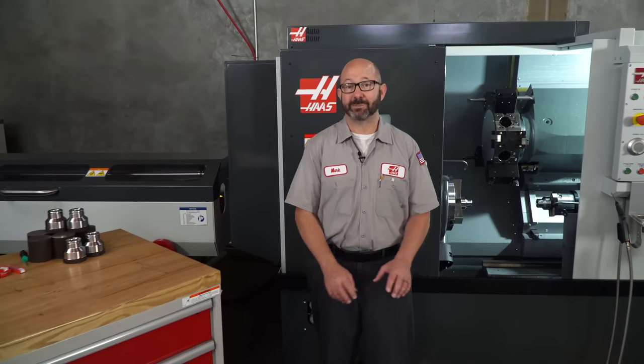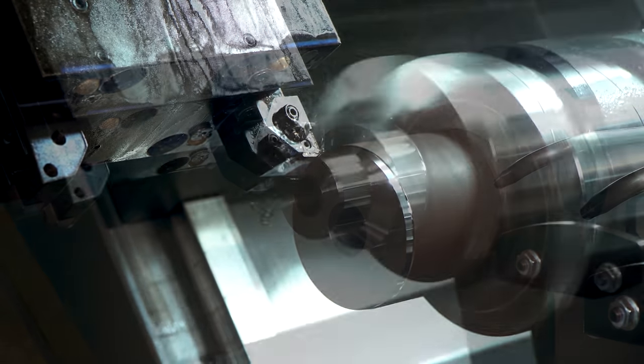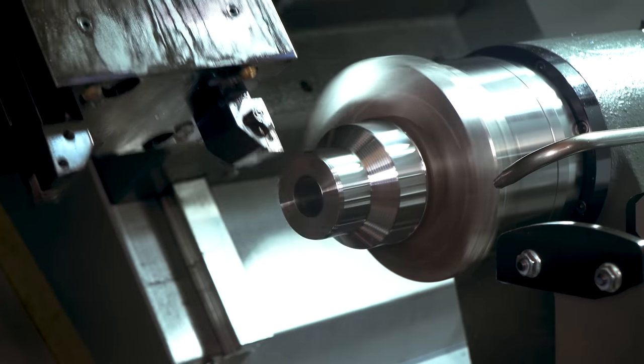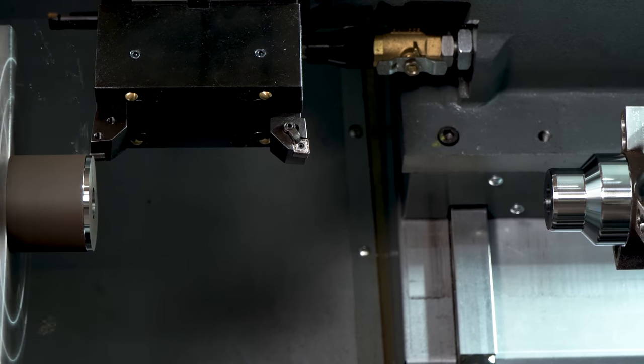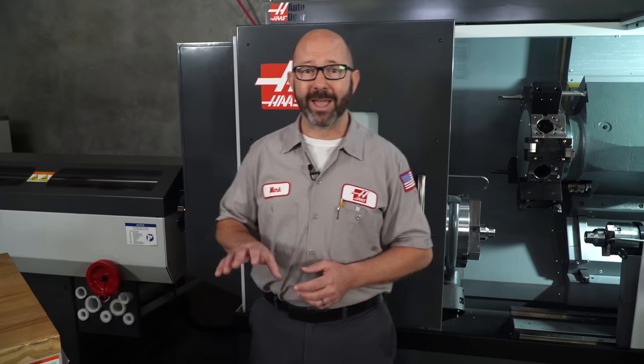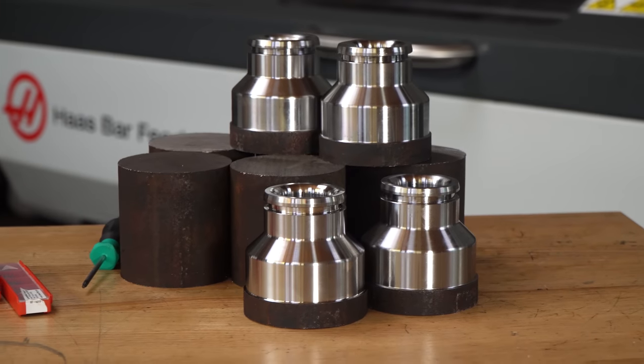Lathes with sub-spindles just make me happy. There's no other way to say it. Having that back spindle allows us to hand off parts and to do finishing work, deeper work on that back spindle, so we can finish everything in one shot. And if we add a Haas bar feeder, what we really have is a little self-contained factory.